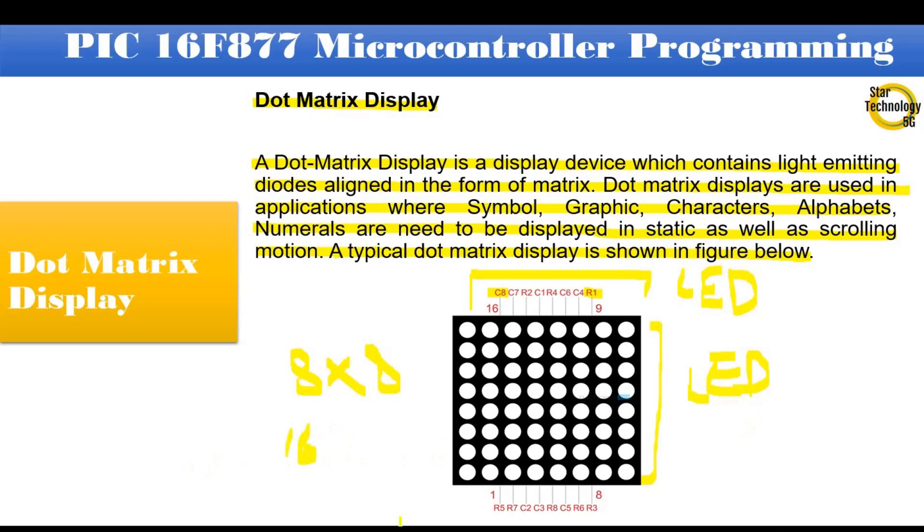The reason the rows and columns are all wired together is to minimize the number of pins required. If this were not the case, a single color 8x8 dot matrix unit would need 65 pins, one for each LED and common anode or cathode connector. By wiring the rows and columns together, only 16 pins are required.